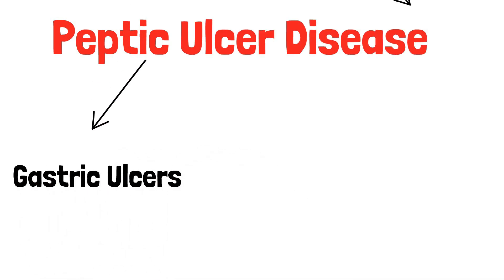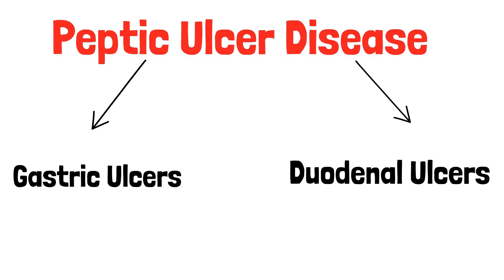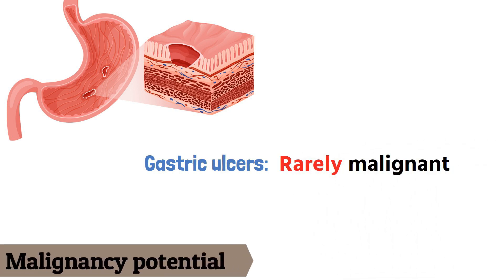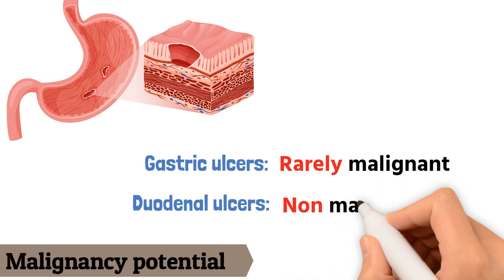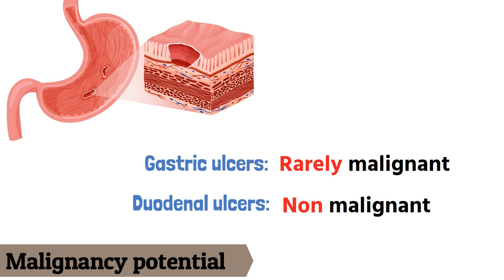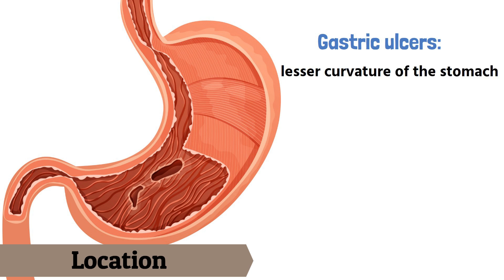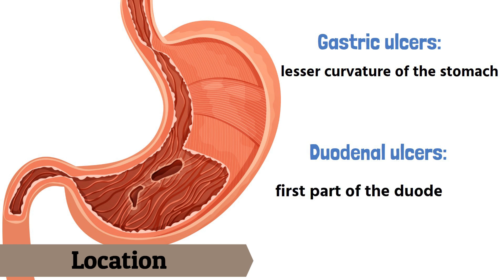Peptic ulcer disease is classified into gastric ulcers and duodenal ulcers, and it's very important to differentiate between these two types. Gastric ulcers are rarely malignant but are considered malignancy until proven otherwise, whereas duodenal ulcers are almost always considered non-malignant. Gastric ulcers are usually located in the lesser curvature of the stomach, and duodenal ulcers are located in the first part of the duodenum.